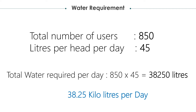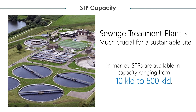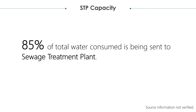A sewage treatment plant is crucial for a sustainable waste management system within a site. In the market, sewage treatment plants are available in capacities varying from 10 kiloliters per day to 600 kiloliters per day. Sources state that 85% of consumed water is sent out as wastewater.